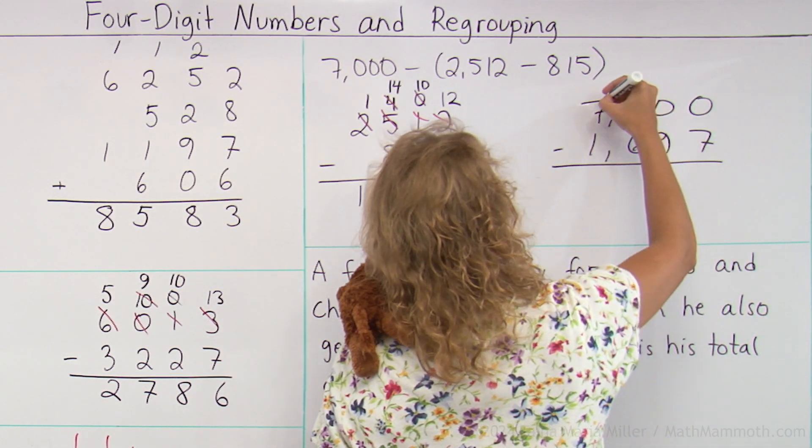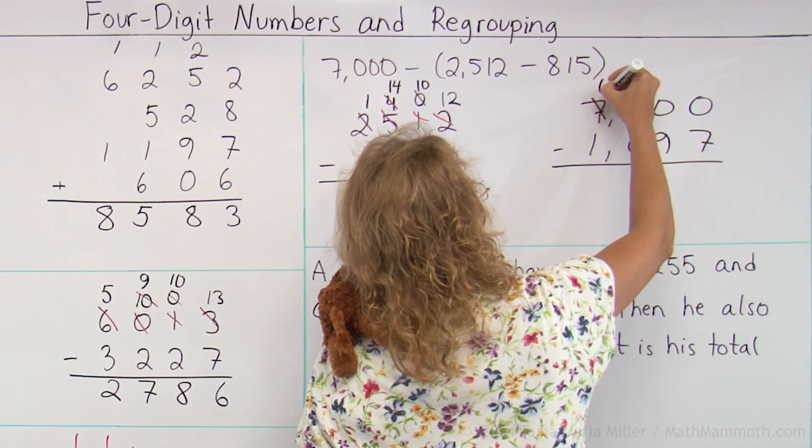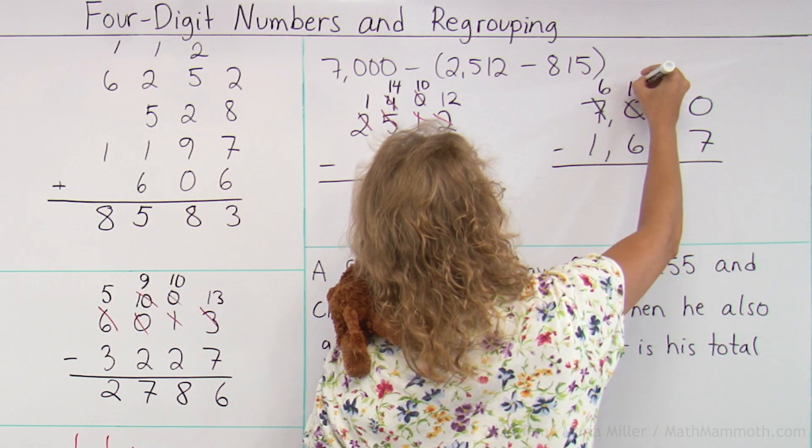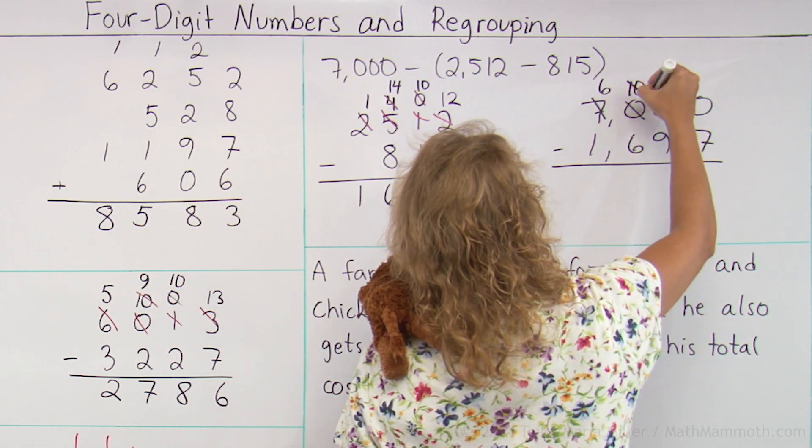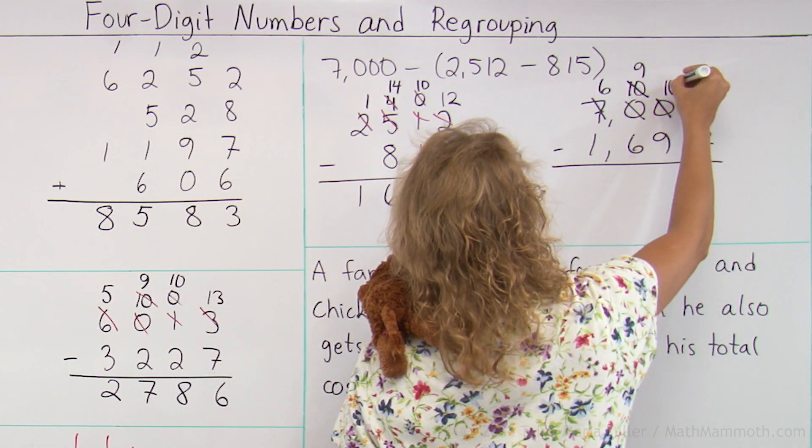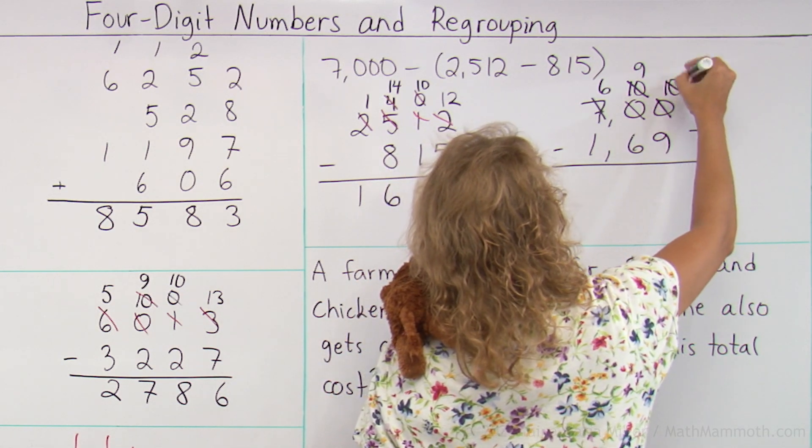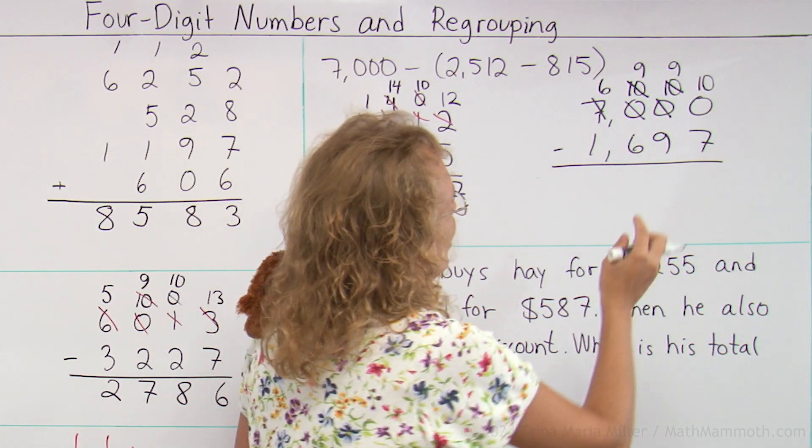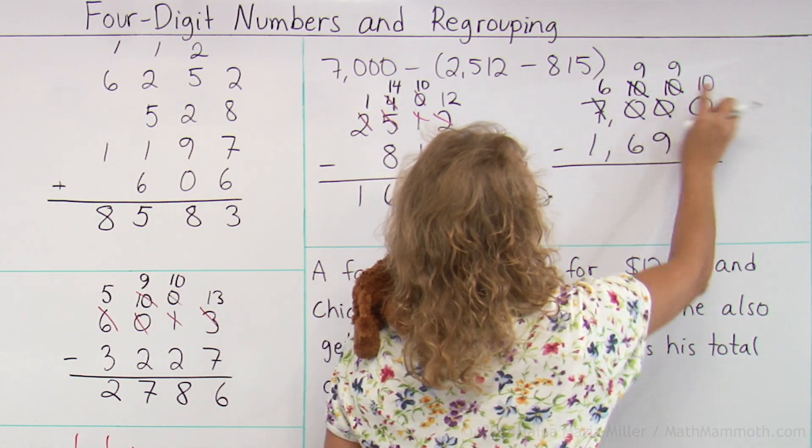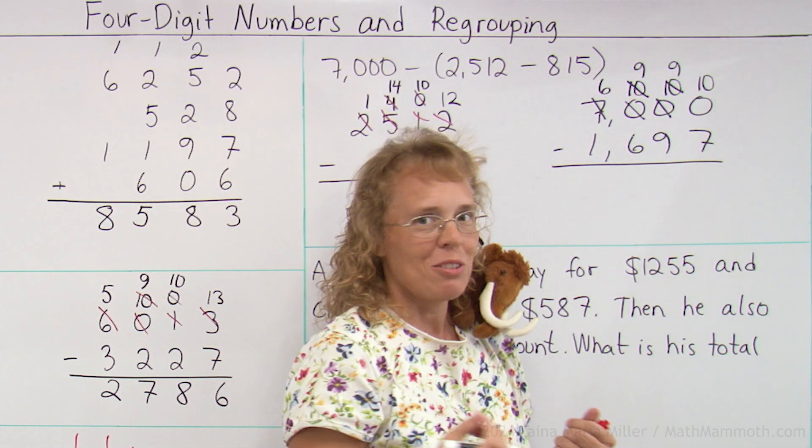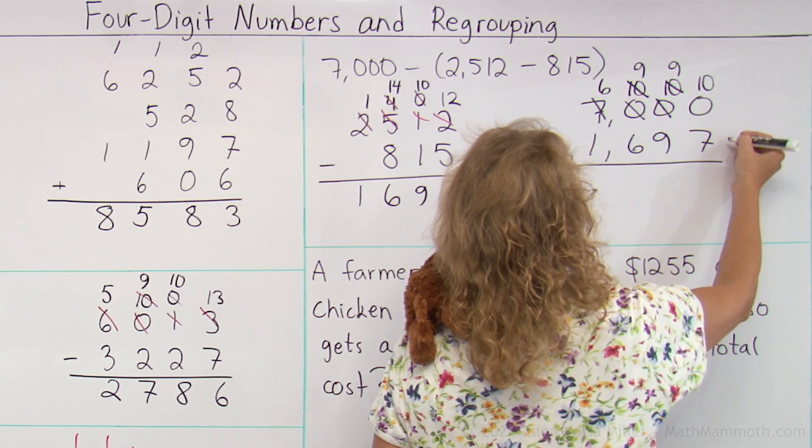Zero minus seven, cannot do it, so you regroup. Over here, six. And over here, ten. And again, leaving nine here, ten here. And again, leaving nine here, ten here. You get this string of nines every time there's lots of zeros and regrouping.